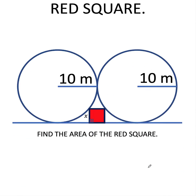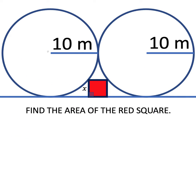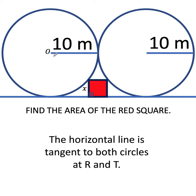Now let's solve this problem together. Let's begin by doing some construction. Let's call the first circle as circle O and let's call the point of tangency of these two circles as point P. The point of tangency between the circle and this red square is point Q, and let's connect the center O with the point of tangency Q. Here, OQ is another radius, therefore its length is also 10 meters.